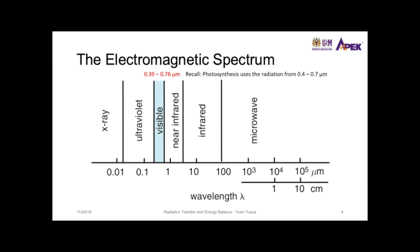Also recall that photosynthesis uses a narrow range of radiation within 0.4 until 0.7 micrometers, which is the same as the visible light radiation.